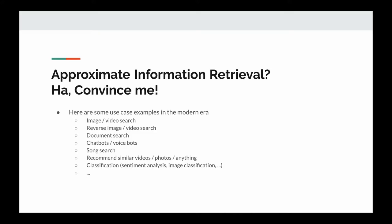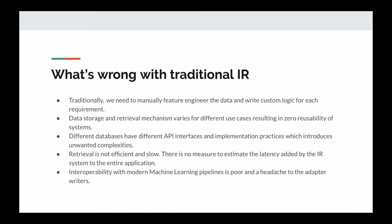Why is approximate information retrieval important? Here are some use case examples in the modern era. You can perform image or video search by providing text information or the image/video itself. You can perform document search with a search query, or use information retrieval systems to build chatbots or voicebots. You can perform song search or similar-song search, recommend similar videos, photos, or anything. You can also perform classification such as sentiment analysis, image classification, or identifying types of errors from server log data, and do live monitoring.